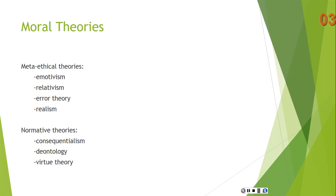So there are meta-ethical theories and normative theories. The one talks about the nature of moral judgments; the other talks about the standards for right and wrong. Examples of meta-ethical theories include emotivism, relativism, error theory, and realism. Examples of normative theories include consequentialism, deontology, and virtue theory. We'll talk about each in turn. For today, we're just going to talk about emotivism and relativism.